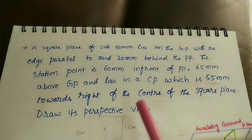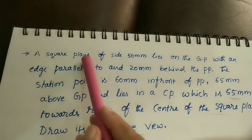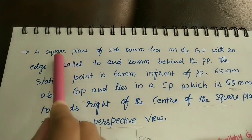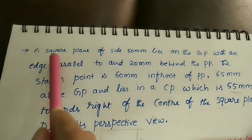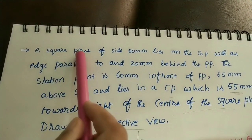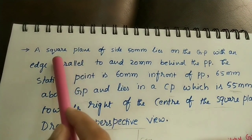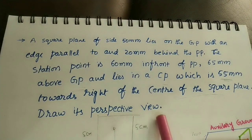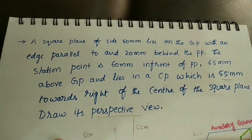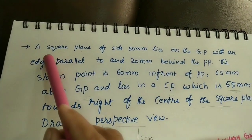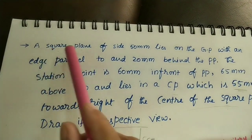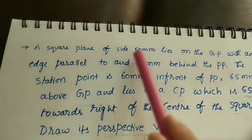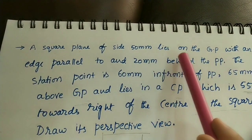So let us do this view of the given square plane. Square plane means all 4 sides are equal, and plane means it has negligible thickness. We will do this square plane perspective view in this class. The given data: a square plane of side 50 mm — each side of the square is 5 cm.